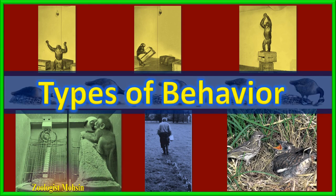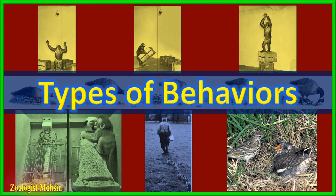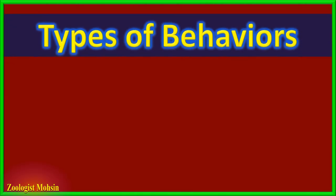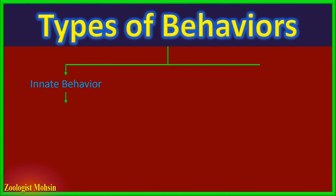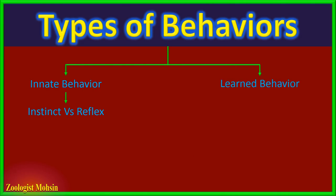All these are examples of different behaviors shown by animals. Today we shall learn about the types of behaviors shown by organisms. There are two major categories of behaviors: innate or instinct behavior, which is based on reflexes, and learned behavior.